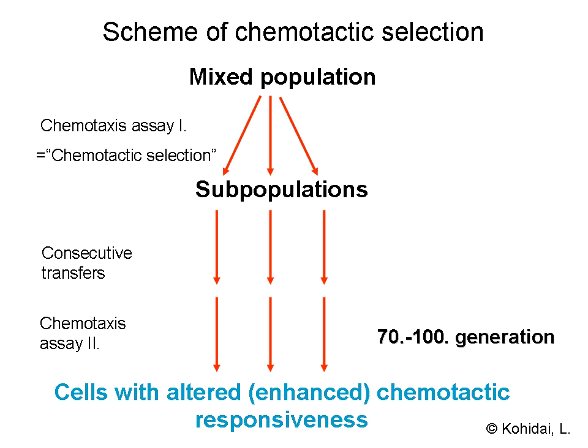Recent results proved that chemokines are working on long-term chemotaxis receptors, while vasoactive peptides act more on the short-term ones. The term chemotactic selection is also used to design a technique which separates eukaryotic or prokaryotic cells upon their chemotactic responsiveness to selector ligands.